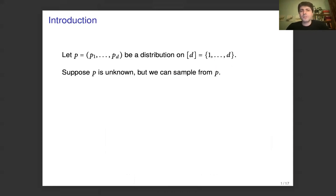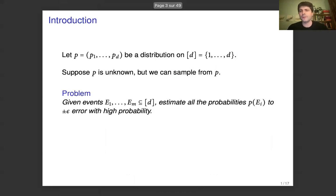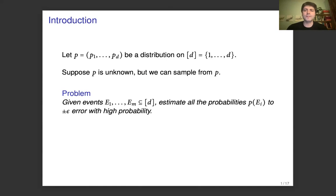Suppose p is a distribution on the integers from 1 to d, and suppose furthermore that p is not known, but we can take samples from p. We have the following problem where we're given m events e1 to em, which are just subsets of 1 to d, and we want to estimate all of their probabilities to plus or minus epsilon error with high probability.